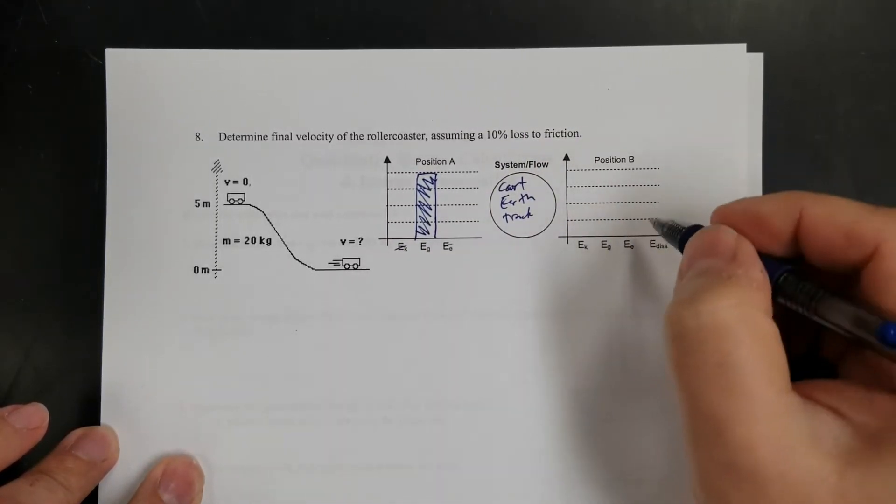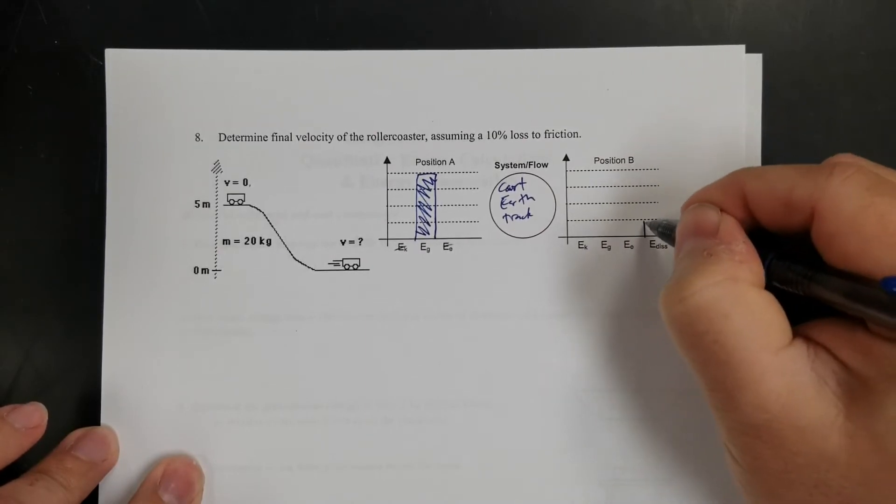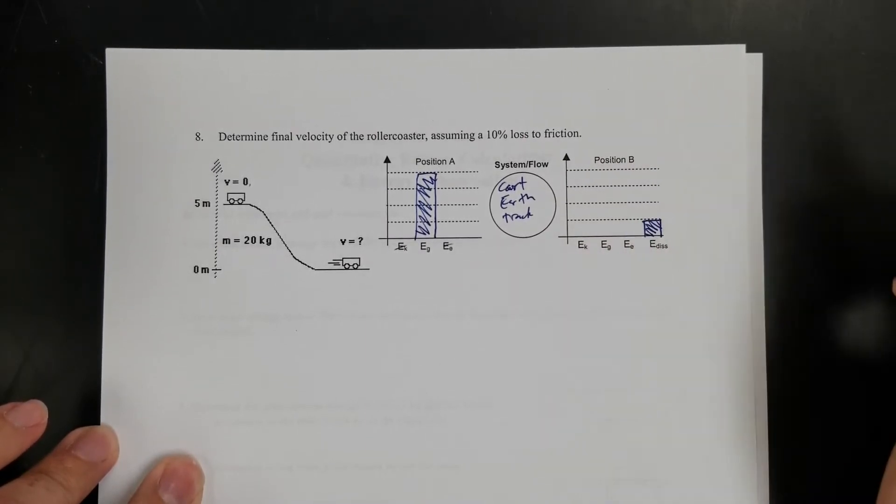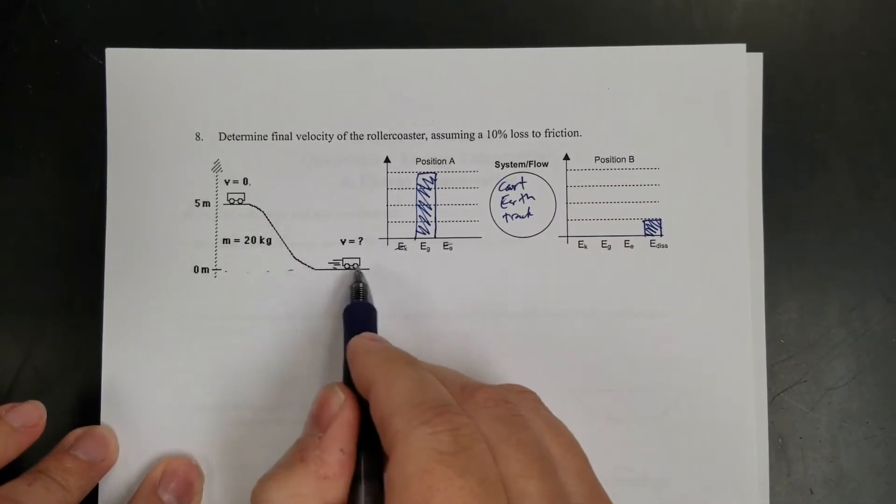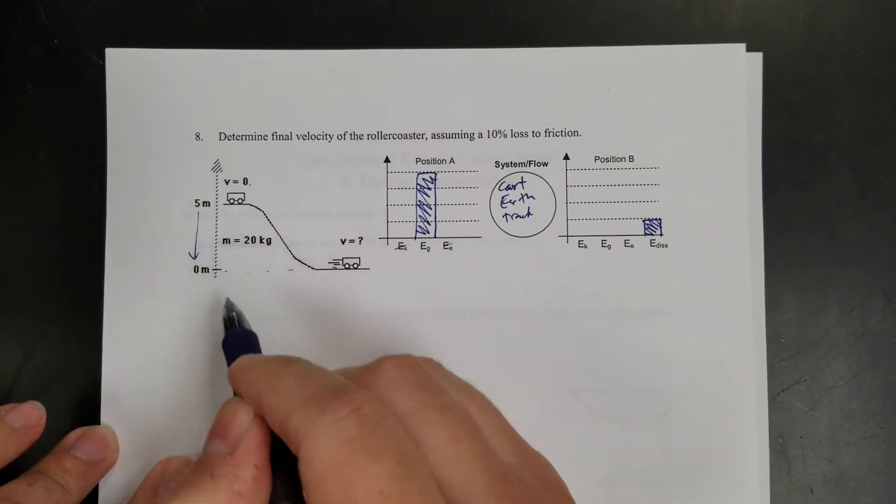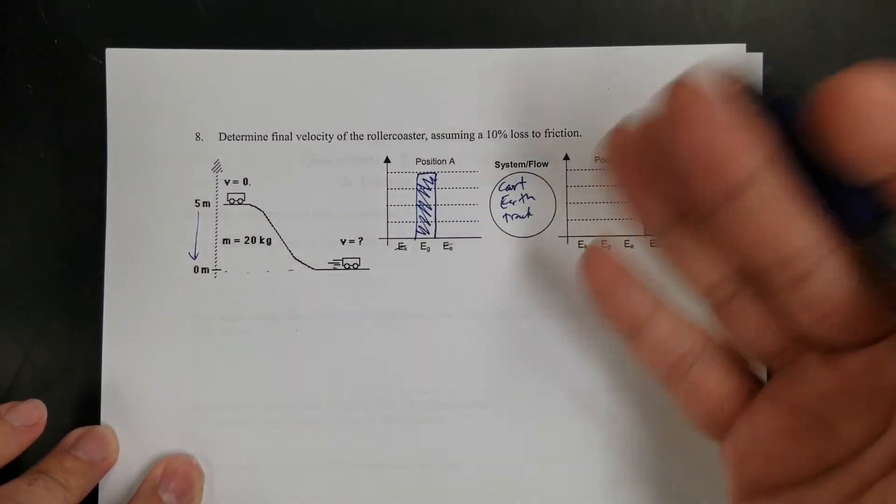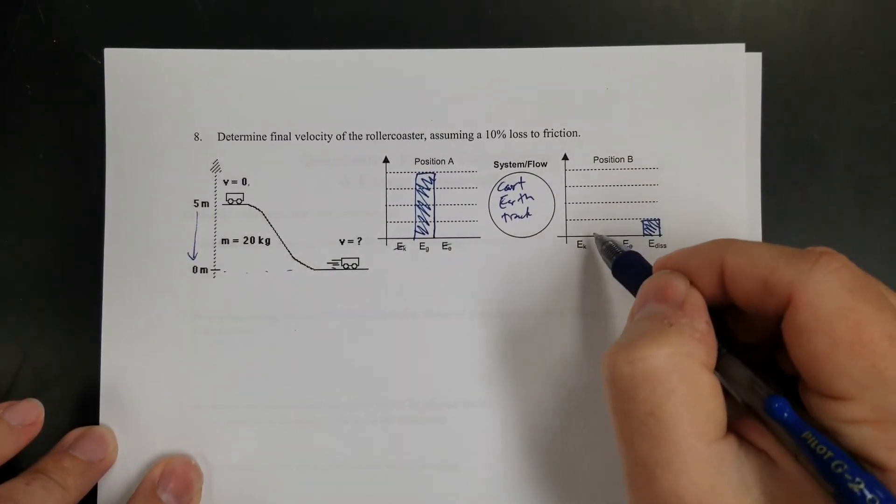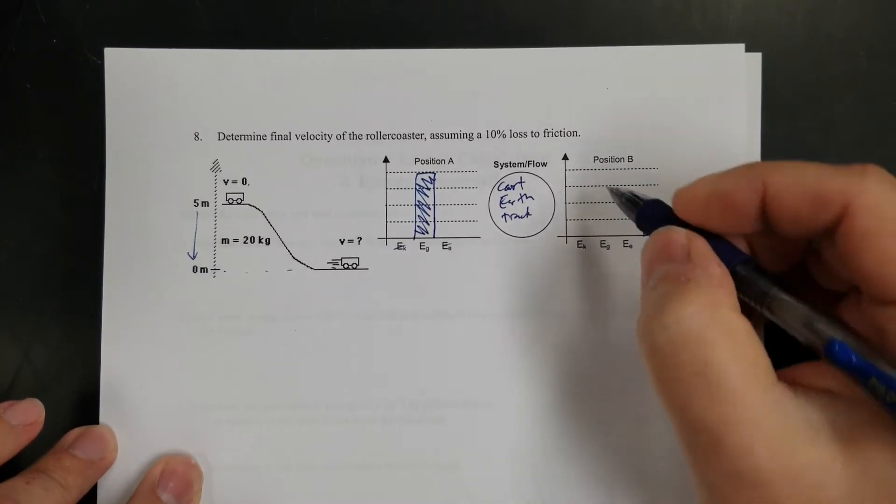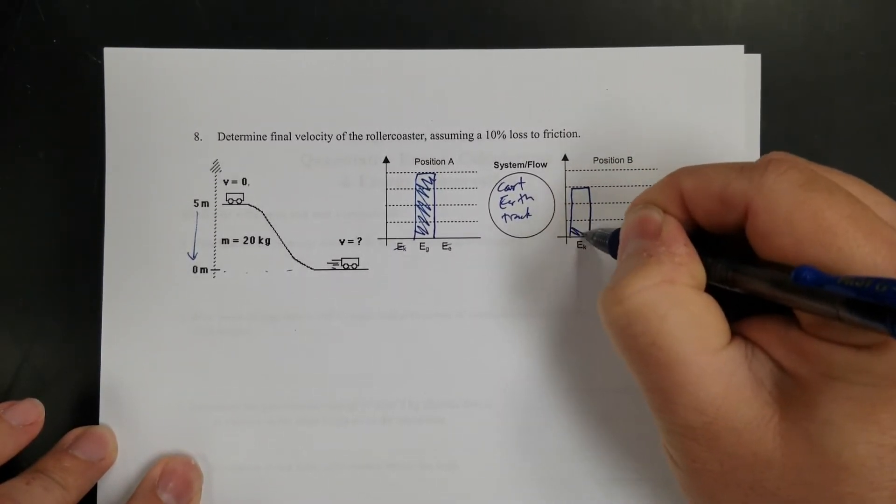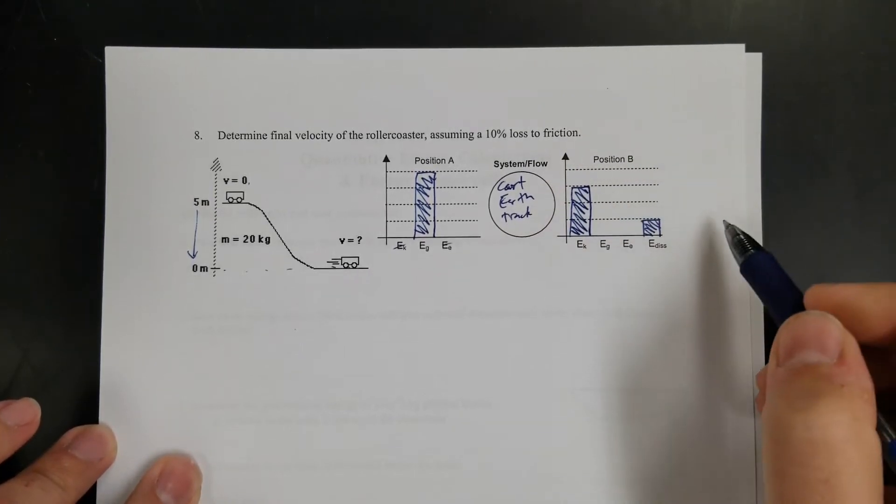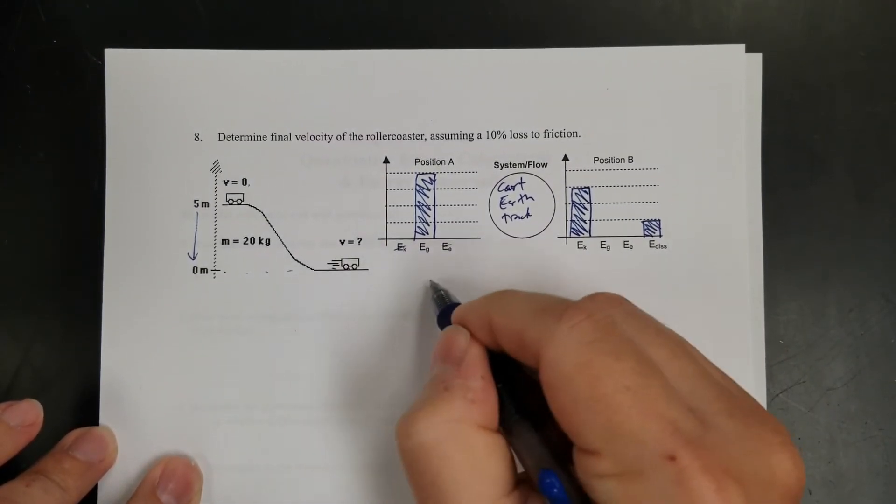All right. So at position B, there's friction. So I'm going to put like one bar for heat. And the rest of it will have become kinetic, right? Because there's no gravitational here because it's at zero. It lost all that gravitational kinetic. I'm sorry, I didn't lose it. It got turned into kinetic. And there's no elastic because there's no spring. So we'll call it three of kinetic.